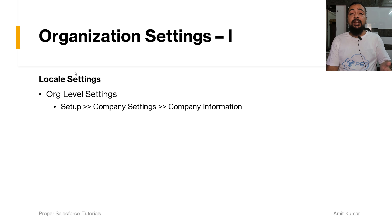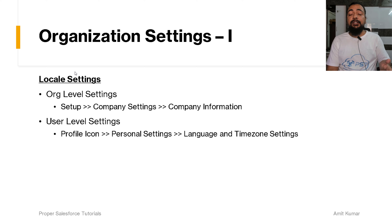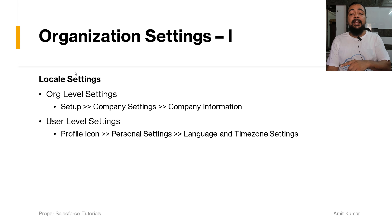For org-level locale settings, we can go to Setup, Company Settings, and from the Company Information page we can change the locale settings for the org. For user-level settings, we can click on the profile icon on the top right, go to Personal Settings, and from there we will have Language and Time Zone settings.